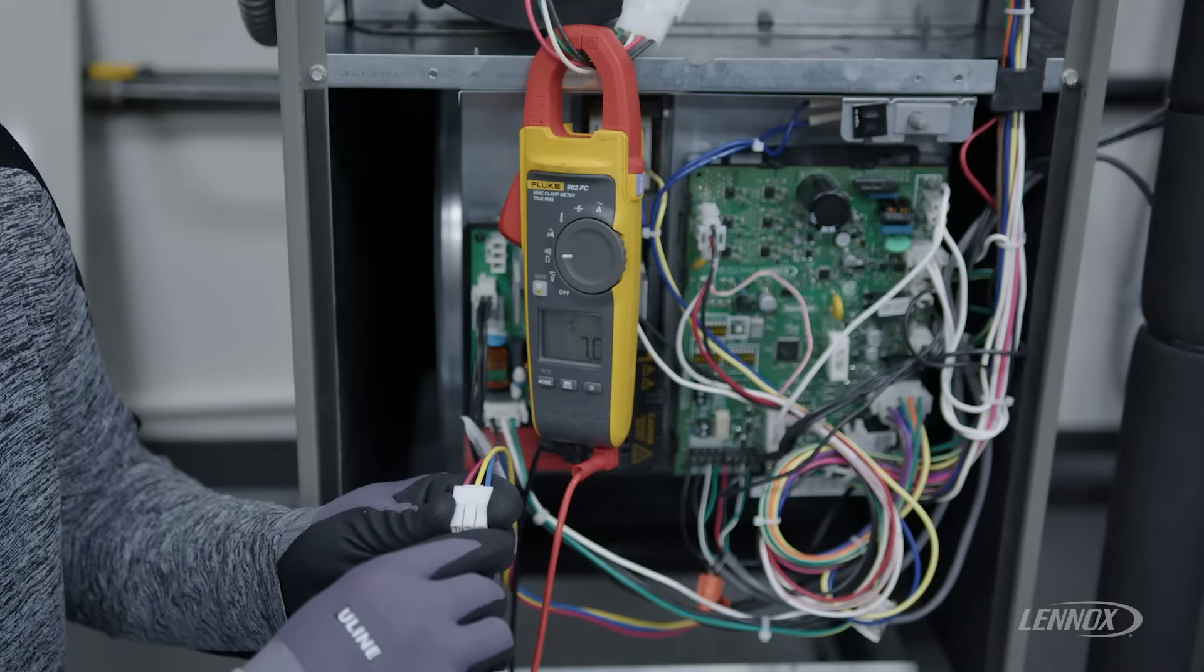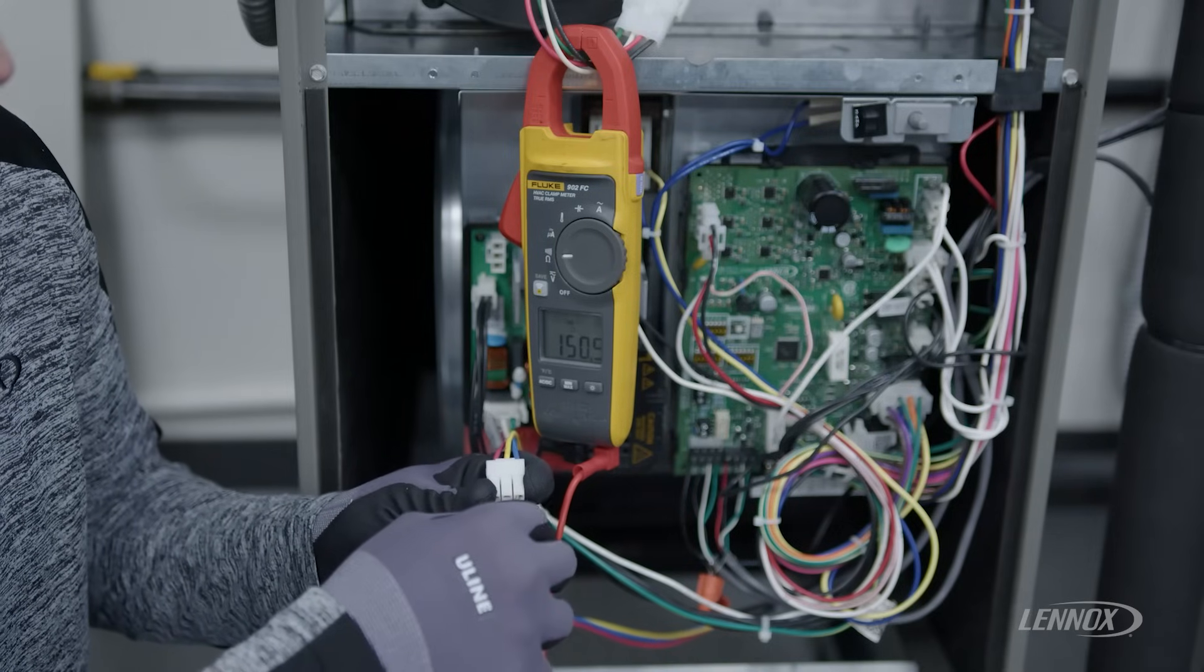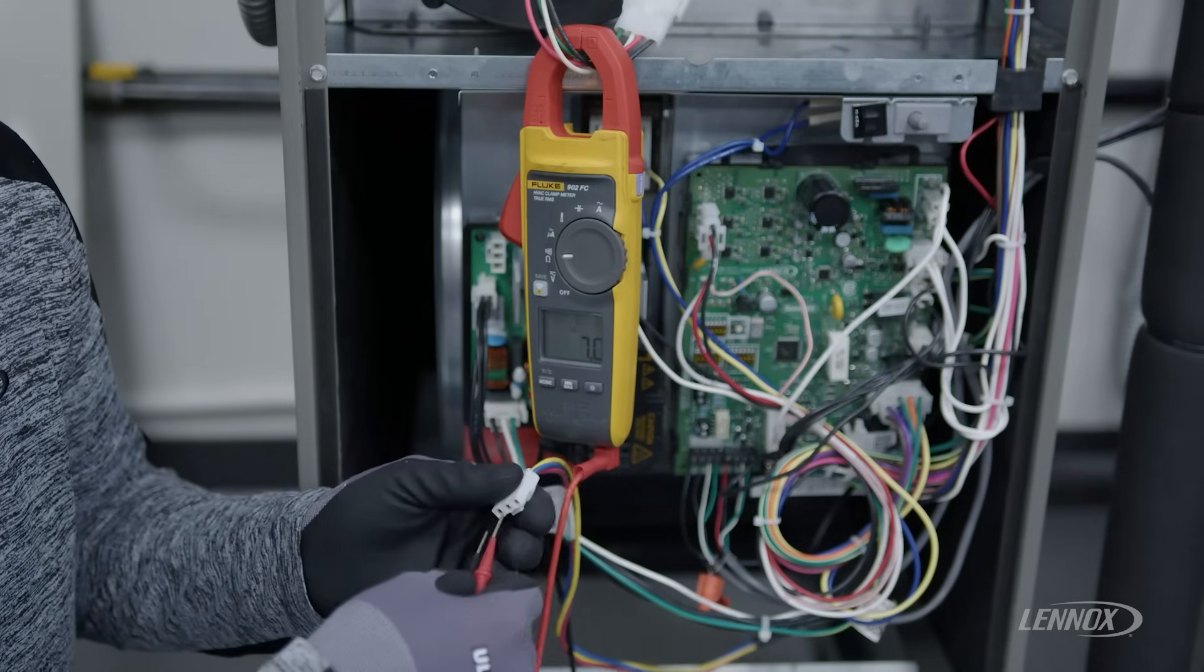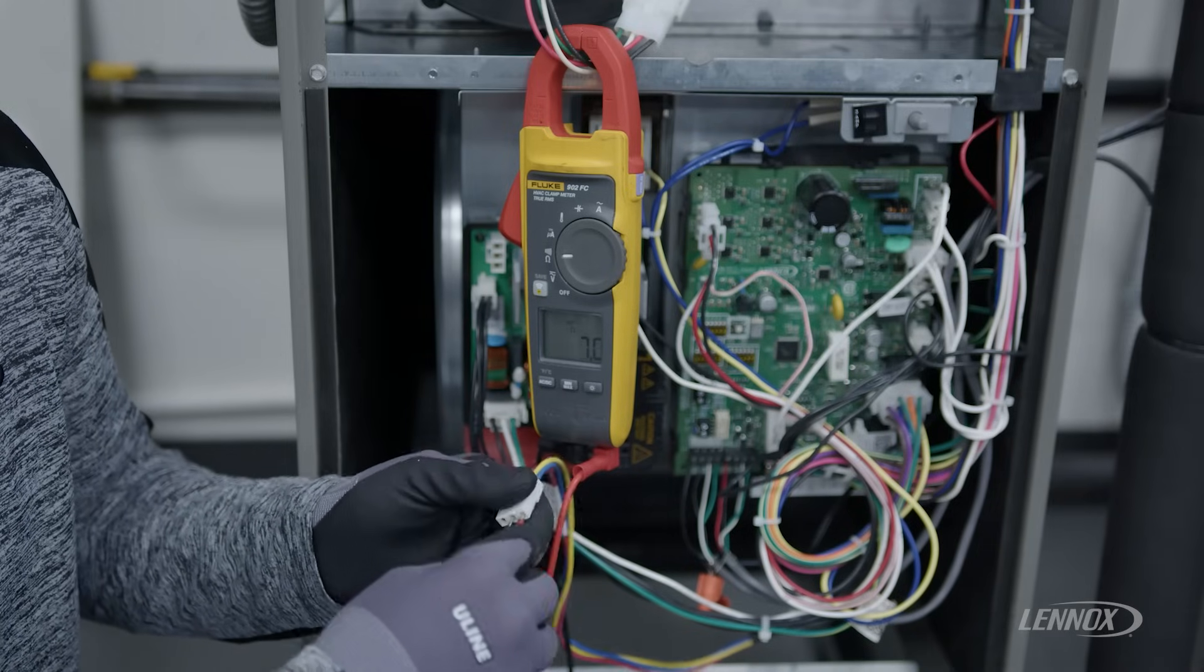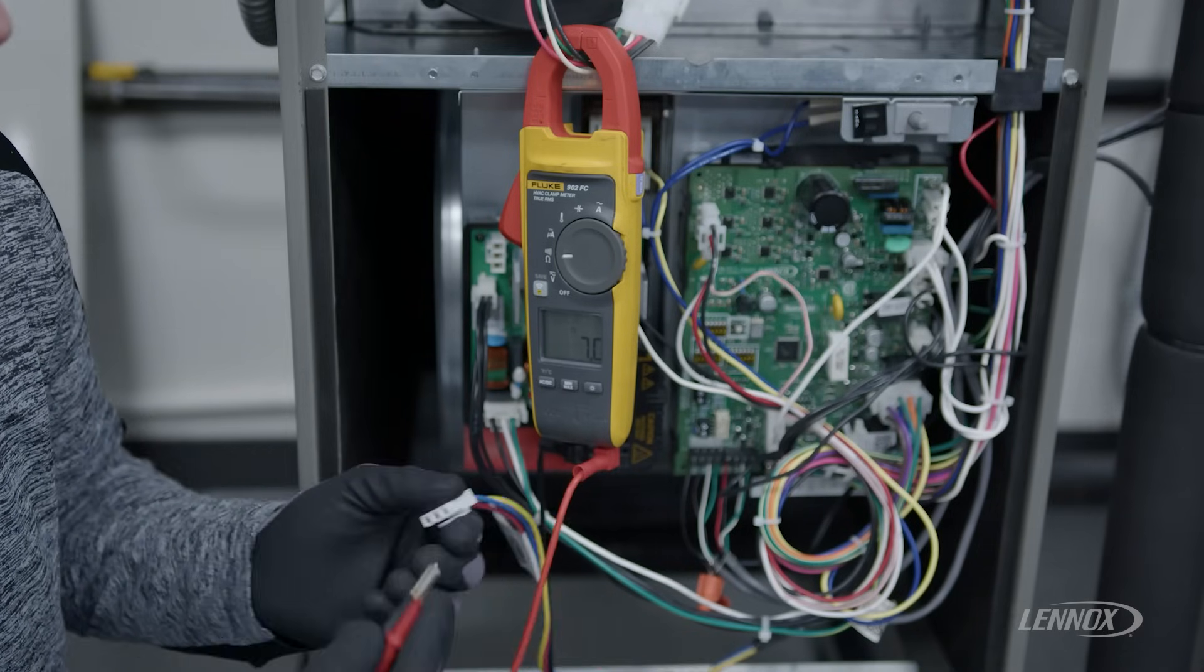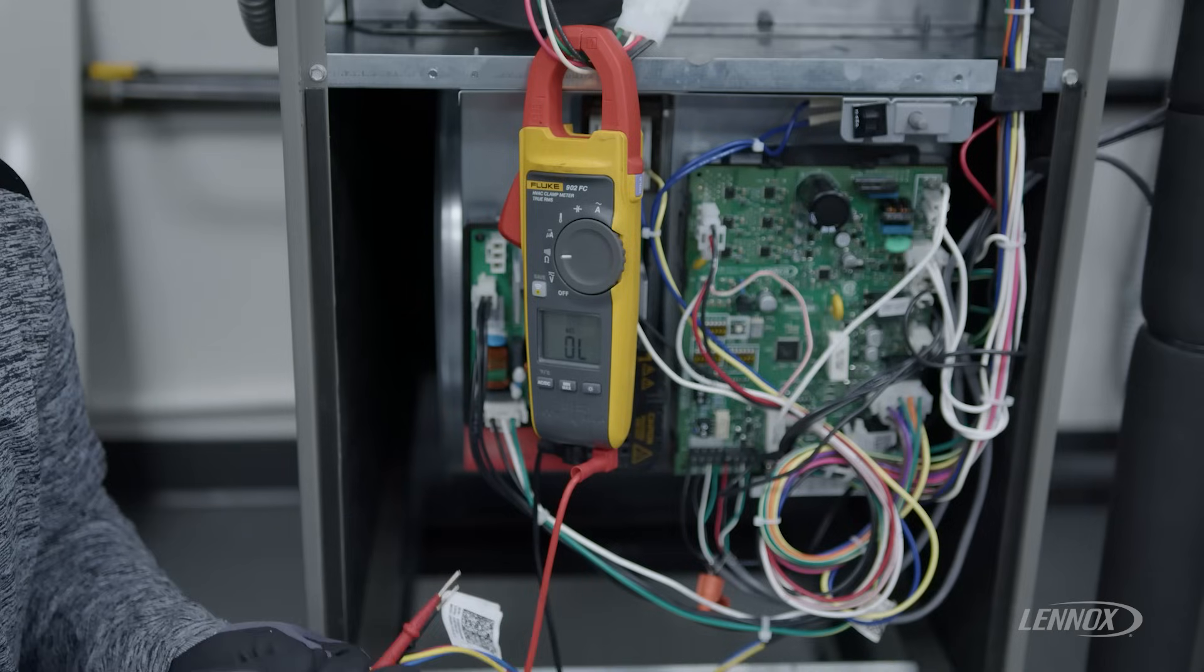Red to yellow is 7.1, red to blue is 7.0, and blue to yellow is 7.0, indicating that our windings are all in line with one another and that this motor is in good shape.